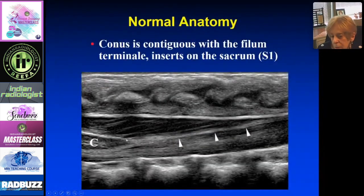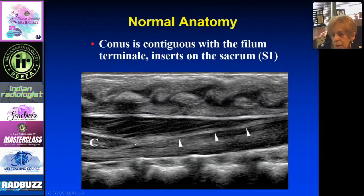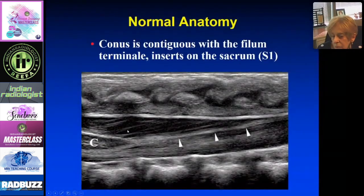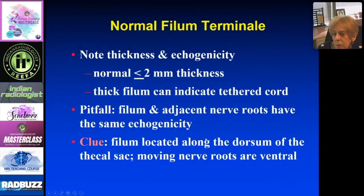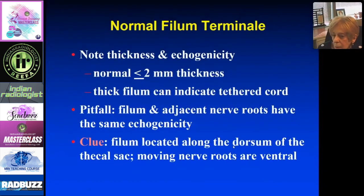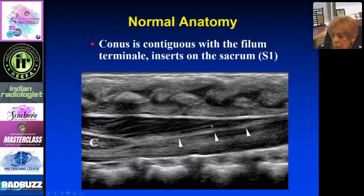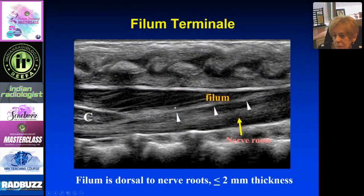The filum terminale extends from the conus to the sacrum. It is anterior, a very thin band — two millimeters or less. The filum should be less than or equal to two millimeters. If it is thicker, it can indicate a tethered cord or a lipoma. You want to separate the filum from the nerve roots, which have the same echogenicity. The filum runs along the dorsal part of the cord, while the nerve roots are ventral.